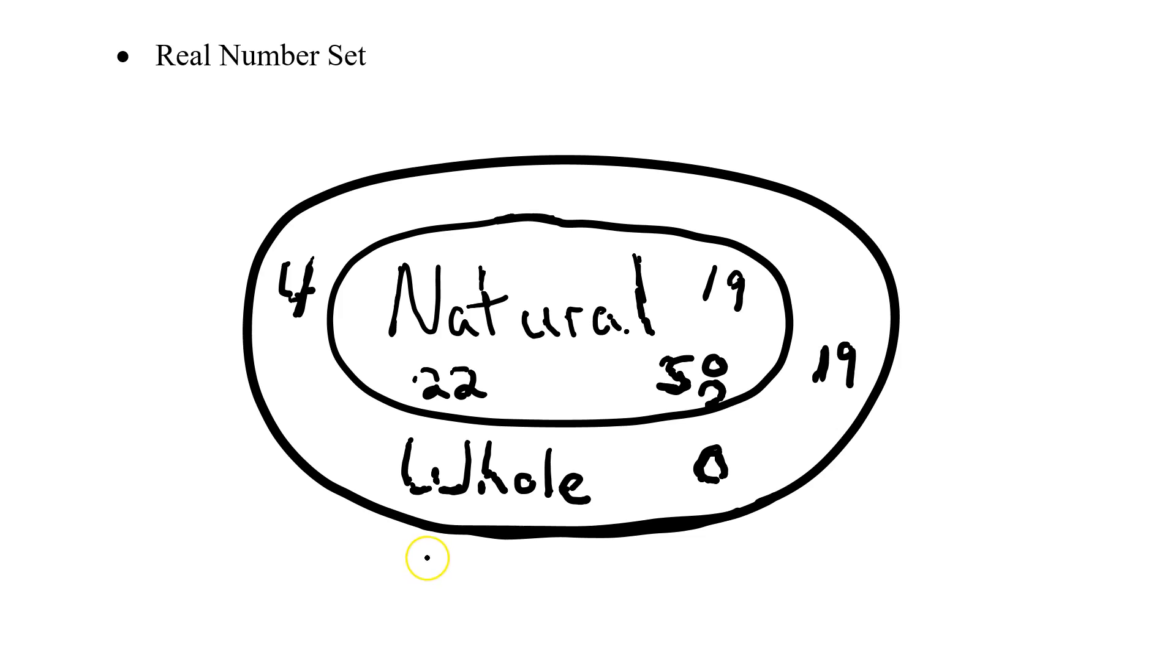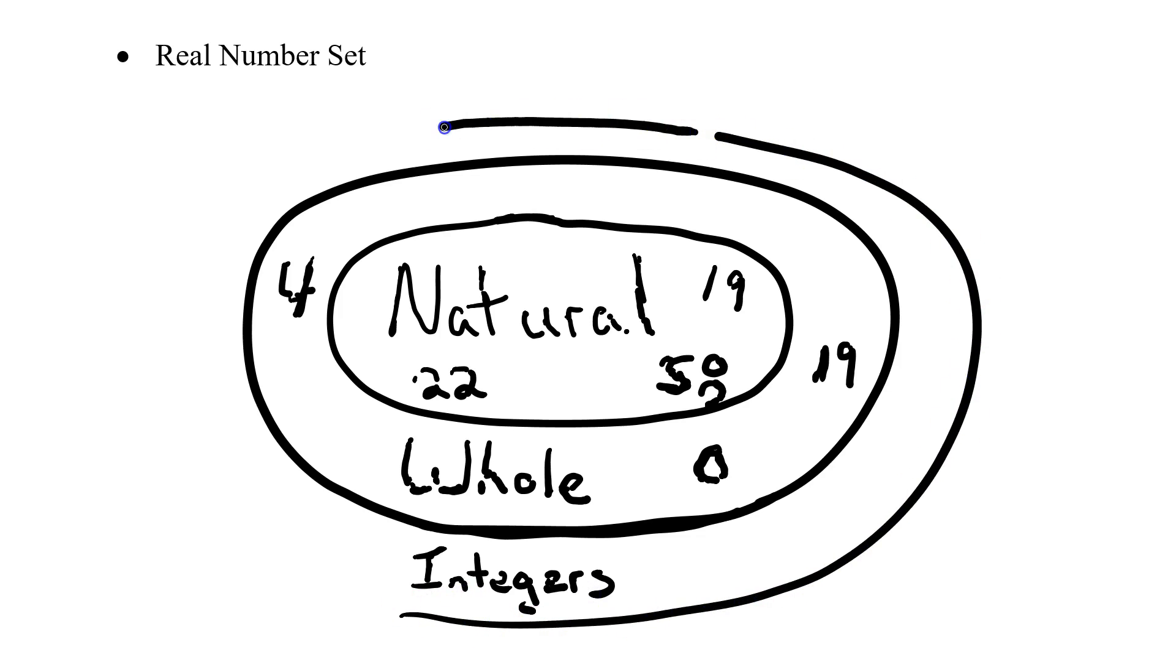Next, we've got our integers. And we will throw this as our next biggest circle. And I do apologize for the pen. It's not quite working the way it should. So now we've got positive and negative numbers. But, again, no decimals or fractions.